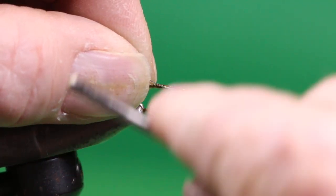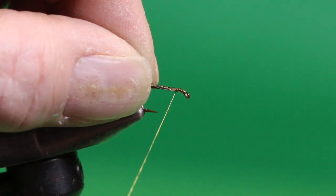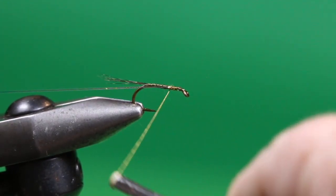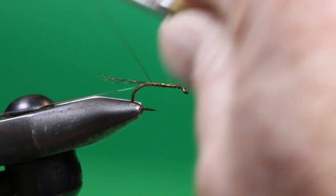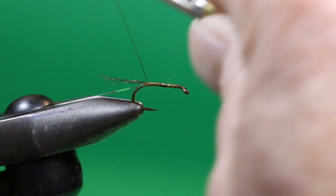I'm just going to take a single strand from the package, hold it up along the near side of the hook, get that tied in, and secure this down the near side, the side closest to the camera, all the way down to the base of the tail.